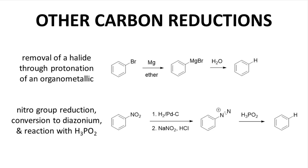Let's see a couple other miscellaneous carbon reductions. We can convert a bromide to a Grignard and then react it with water — the overall transformation is from a C–Br bond to a C–H bond, and that is a reduction. At the bottom, we see a nitro group on an aromatic ring. The nitro group can be converted to a diazonium ion, which can be replaced with hydrogen through a reaction with hypophosphorus acid, H3PO2. The overall transformation is to lose a C–N bond and replace it with a C–H bond — that is a reduction.